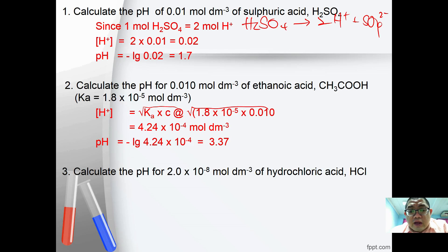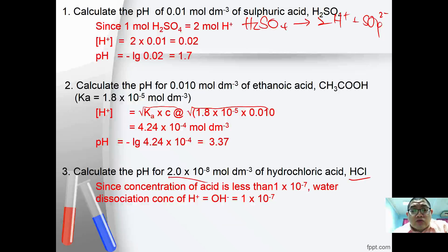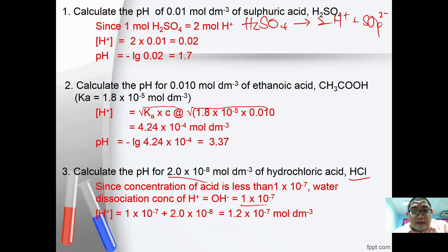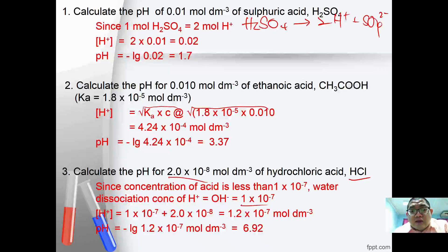Third question: calculate the pH for 2.0×10⁻⁸ mol/dm³ hydrochloric acid. This is a very dilute acid, so water dissociation must also be considered since the concentration is less than 1.0×10⁻⁷. Water gives [H⁺] = [OH⁻] = 1×10⁻⁷, so total [H⁺] = 1×10⁻⁷ + 2×10⁻⁸ = 1.2×10⁻⁷. Therefore pH = −log(1.2×10⁻⁷) = 6.92.